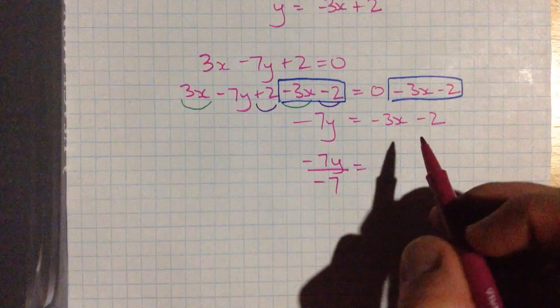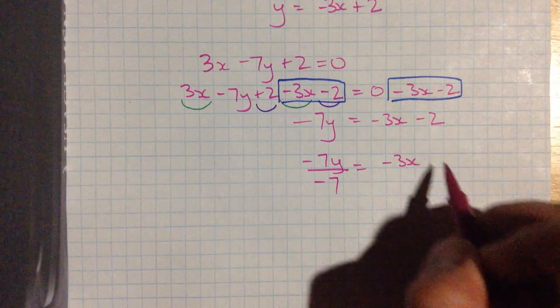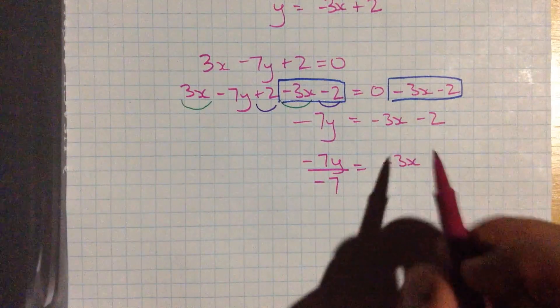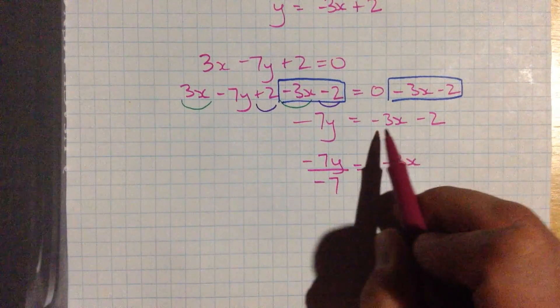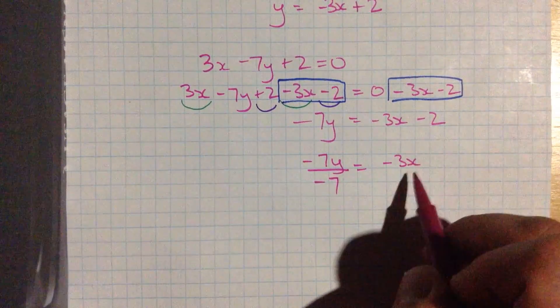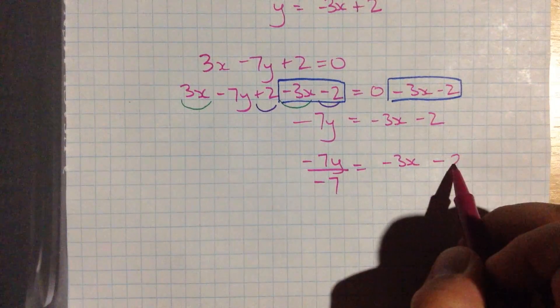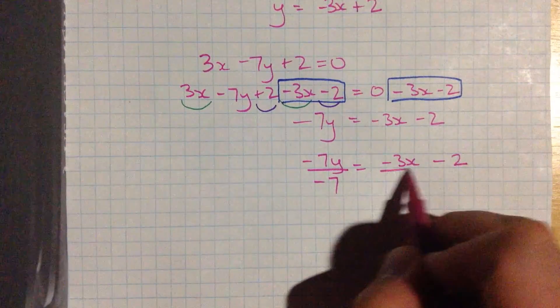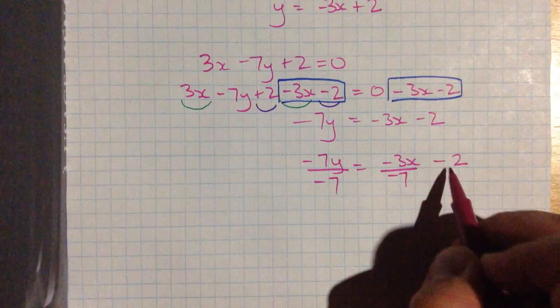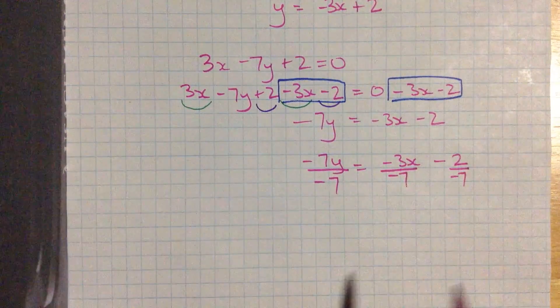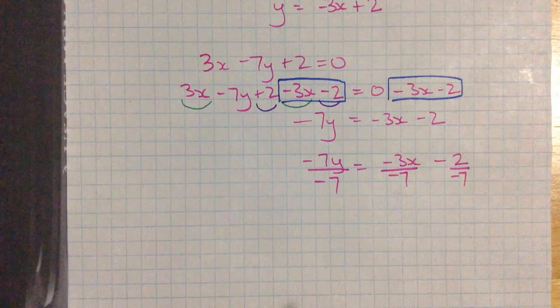So negative 7. There's a couple ways you can do this. You can divide the whole thing by negative 7. Or what I like to do is divide each term by negative 7. So this over negative 7. And then over here, divide it by negative 7. There's quite a few options for how to work this through.